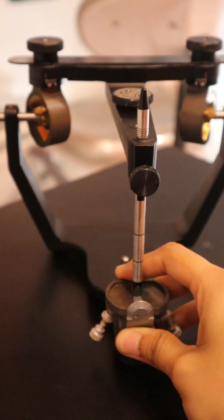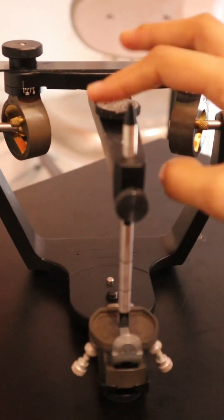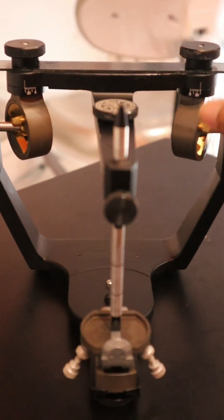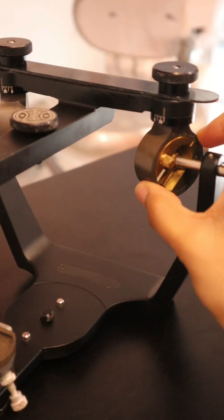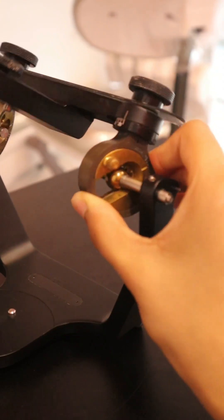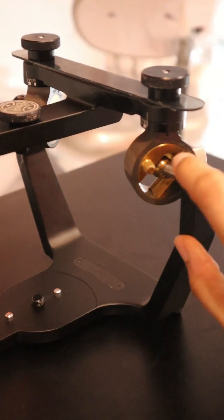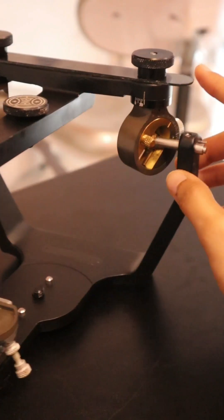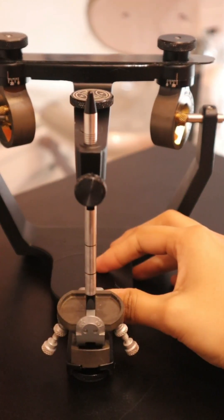And this is the condyle member as I'm showing you. As you can see over here, the condylar guidance is situated in the upper member, and the ball which is present represents the condyle—the condylar element—which is situated in the lower member.